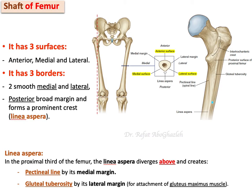Now let us shift to the shaft of the femur. If you take a cross section of the femoral shaft, you will find it has three surfaces and three borders. Anteriorly there is the anterior surface, and then the lateral and medial surfaces. The margins between them are the medial margin, lateral margin, and posterior margin. Most importantly, the posterior margin forms the linea aspera, which is a protruded ridge on the back of the femur.